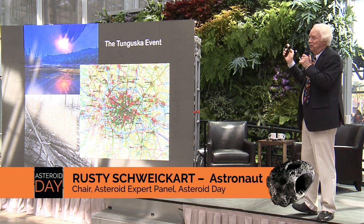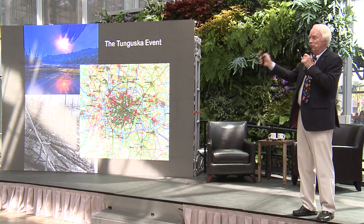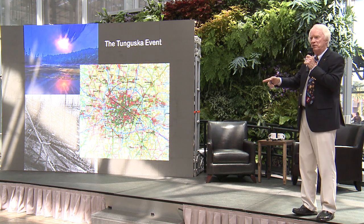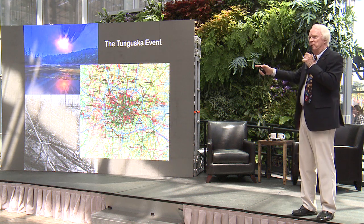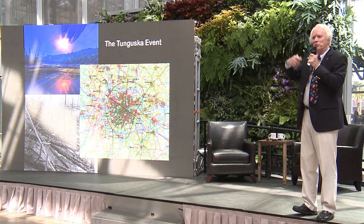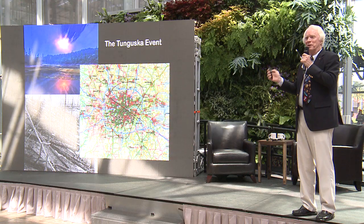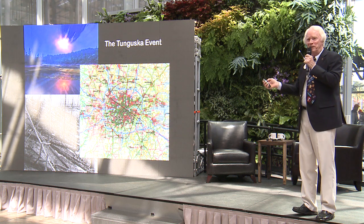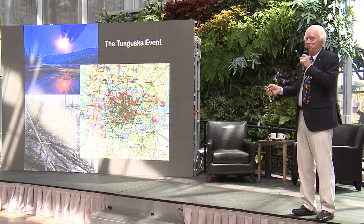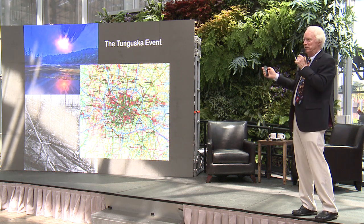If the Earth gets hit once every 500 years, cities don't cover the whole Earth, so a city would only be hit maybe once every 200,000 years. But nevertheless, you don't know that, and if one's coming in you want to stop it from hitting the Earth, because you're never sure whether or not it's going to hit a city.